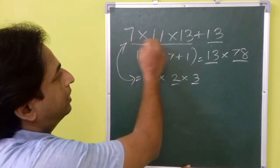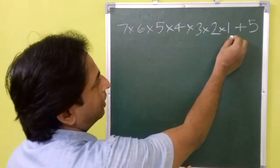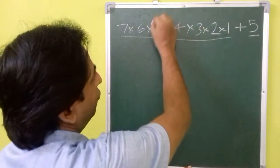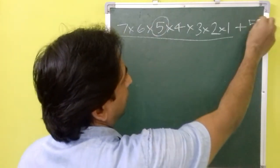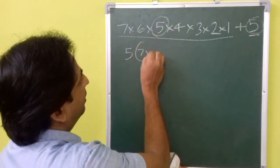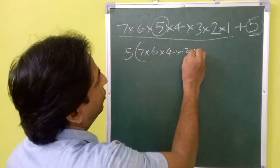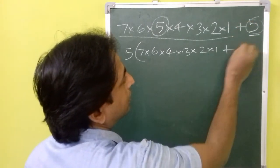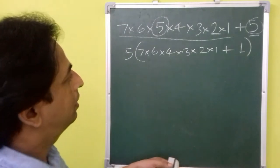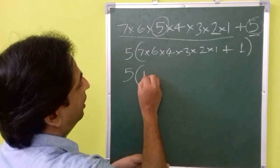As we did in the previous question, we can take the common thing out. This is a term and this is another term. You can see 5 is a common factor, so we can take it out. So we are going to get 7 times 6 times 5 times 4 into 3 into 2 into 1, plus 1 for this because we have taken the 5 out. That means 5 into, when you multiply this, you are going to get 1008 plus 1.